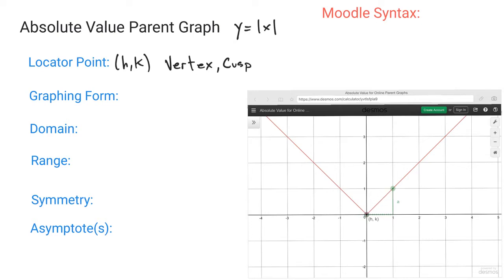Now the graphing form is going to be Y equals A times the absolute value of X minus H, and then plus K. So the X minus H is inside where the X was in your original equation.